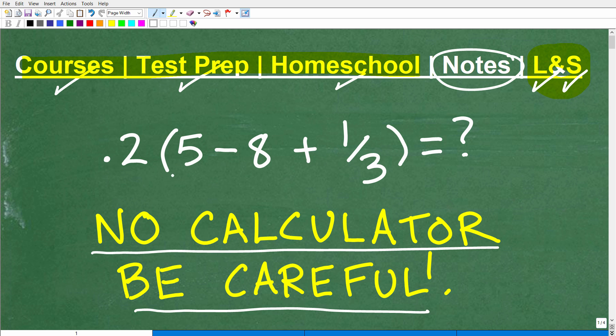Okay, so we've got 0.2 times, or 0.2, this is parentheses, or we could say 0.2 parentheses 5 minus 8 plus 1 third, and parentheses, what is this equal to? Well, let's go ahead and take a look at the answer right now.